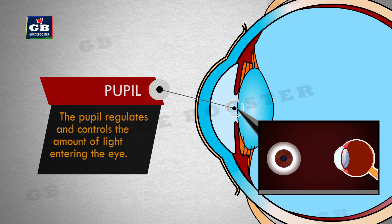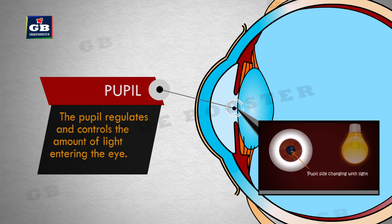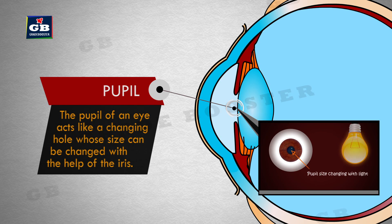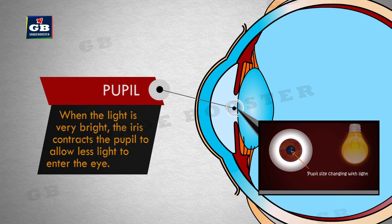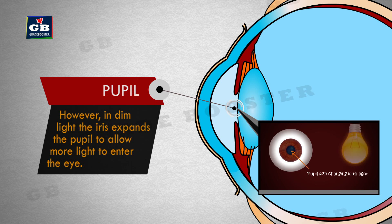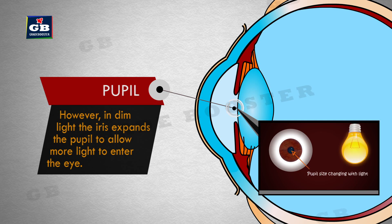This is the pupil. The pupil regulates and controls the amount of light entering the eye. The pupil acts like a changing hole whose size can be changed with the help of the iris. When the light is very bright, the iris contracts the pupil to allow less light to enter the eye. However, in dim light, the iris expands the pupil to allow more light to enter the eye.